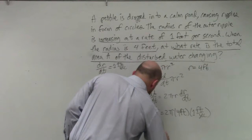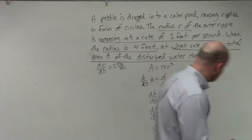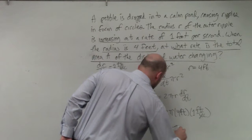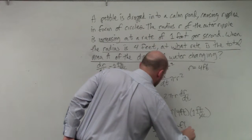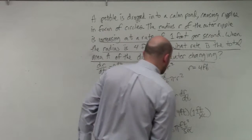So therefore, dA/dt is going to be 8π feet per second squared, or feet squared per second.